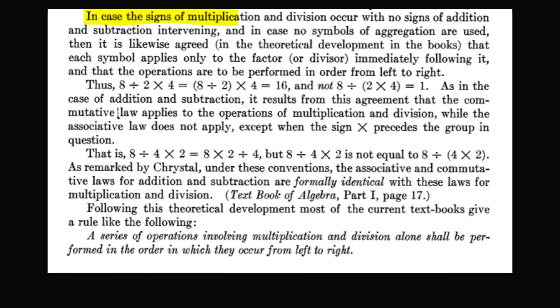In this article, the author explains, in case the signs of multiplication and division occur, the operators are to be performed in order from left to right. So we have an example. 8 divided by 2 times 4 is evaluated from left to right. So we have 8 divided by 2 first, then we multiply by 4 to get 16. And not the other way around where we group the multiplication of 2 by 4. A series of operations involving multiplication and division alone shall be performed in the order in which they occur from left to right.